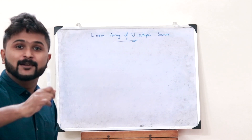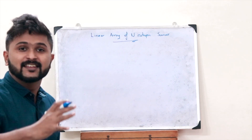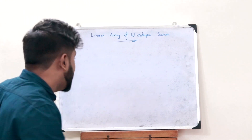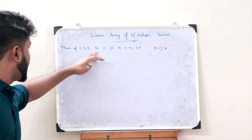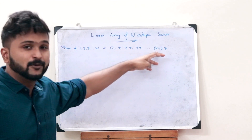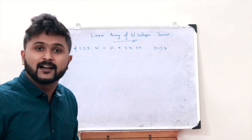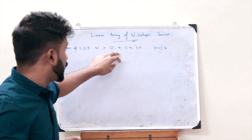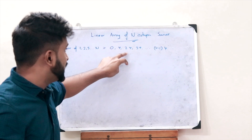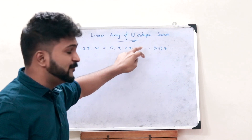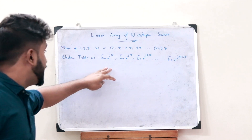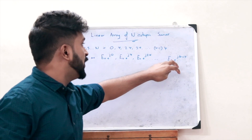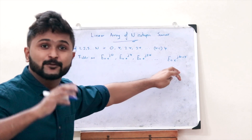The phases of sources 1, 2, 3, up to n are given as 0, ψ, 2ψ, 3ψ, up to (n−1)ψ. Therefore, the corresponding electric fields are e₀·e^(j0), e₀·e^(jψ), e₀·e^(j2ψ), and so on up to e₀·e^(j(n−1)ψ).